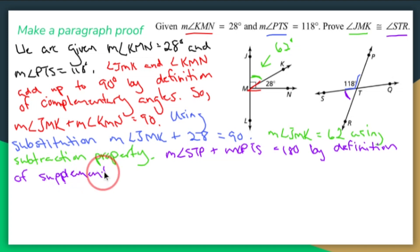See these guys add up to make 180. And I'm hoping by doing 180 minus 118, I get 62. I do. And if I get 62, then I can show that these guys are the same.